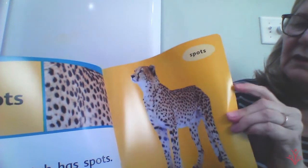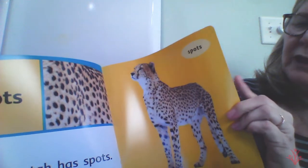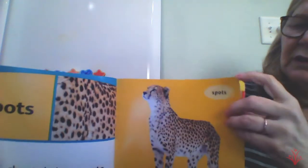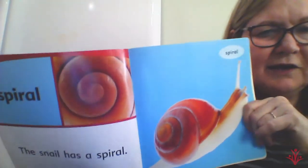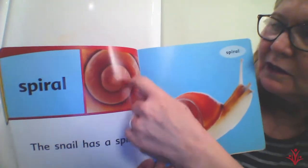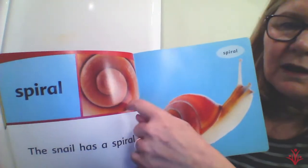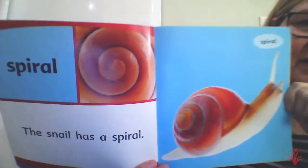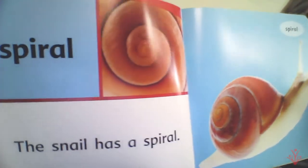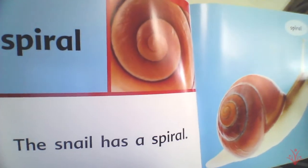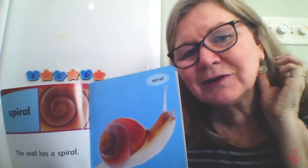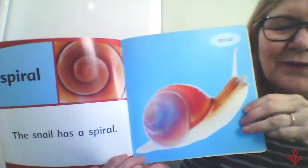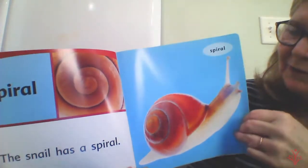Let's see — we have one more page left in here. A spiral. You can kind of see a pattern in that snail — that snail has a spiral. Look, I have earrings on and I have a spiral in my earrings too, just like this little snail.